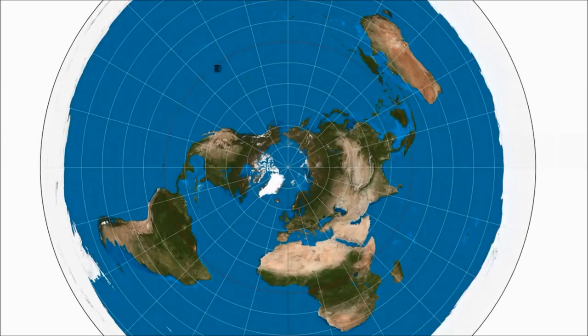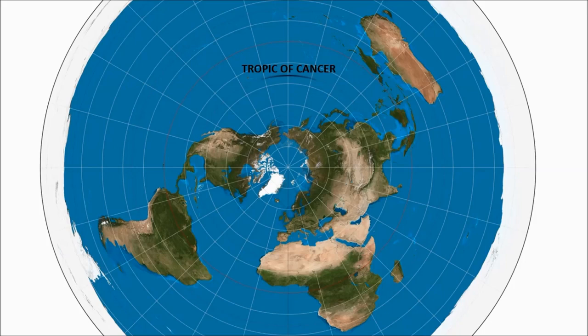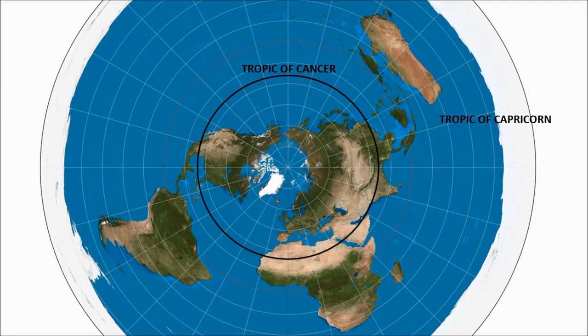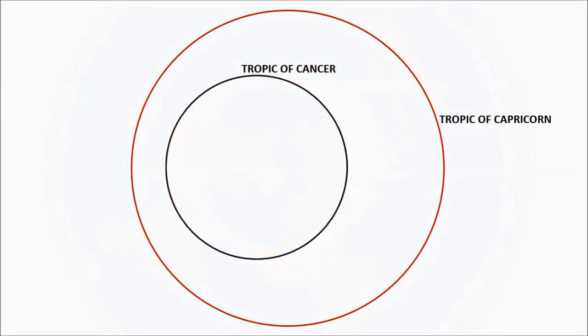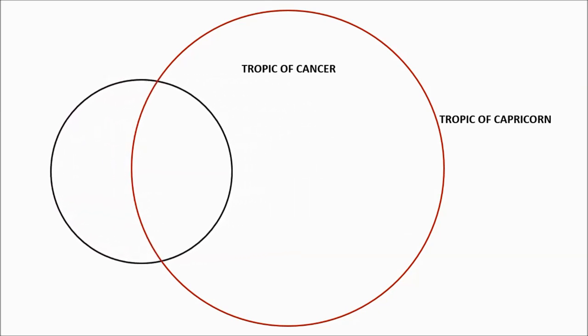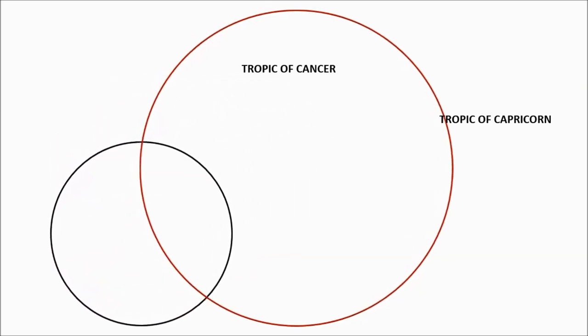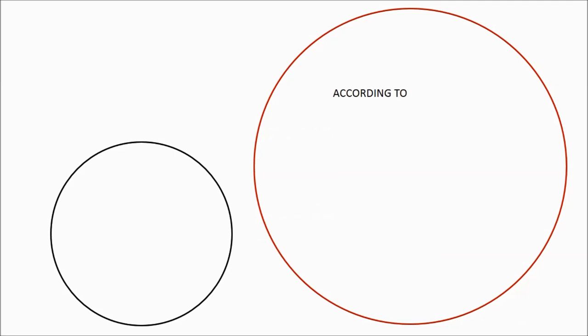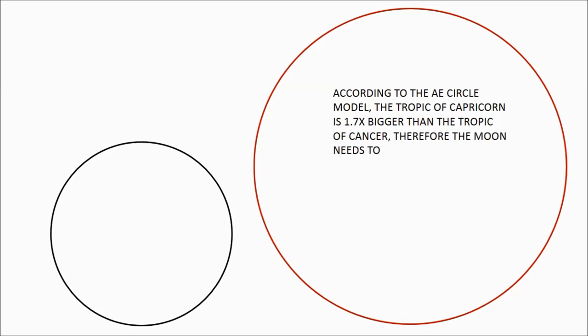And then you have the speed of the moon. It's also observable, easily observable. The moon moves between the tropics of cancer and Capricorn over the month. It takes a month to do what the sun takes a year to do. And on the circle model, the tropic of cancer is a lot smaller. You put them side by side and the tropic of Capricorn is 1.7 times bigger. So the moon must have to speed up and slow down by around 70% each month. And that should be easily observable. And we can test that.